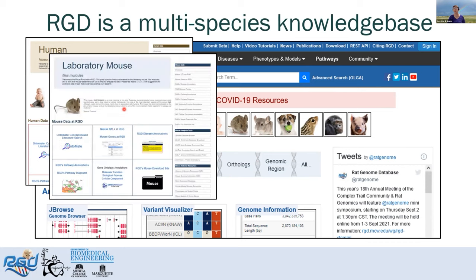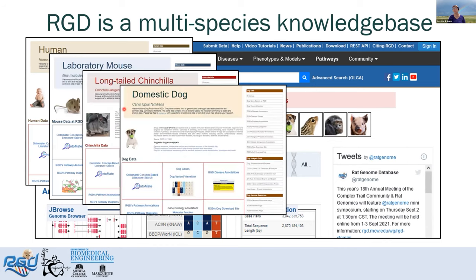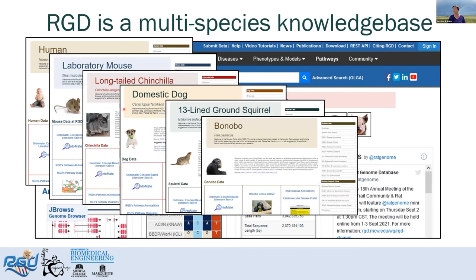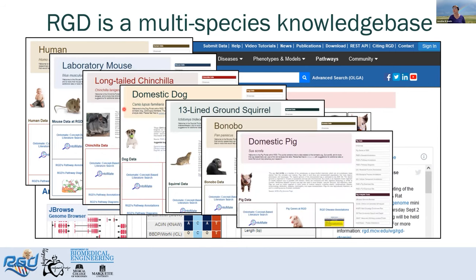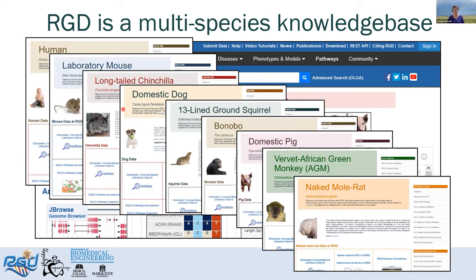We have human, mouse, long-tailed chinchilla, domestic dog, 13-lined ground squirrel, bonobo, domestic pig. And coming soon we have green monkey and the naked mole rat.